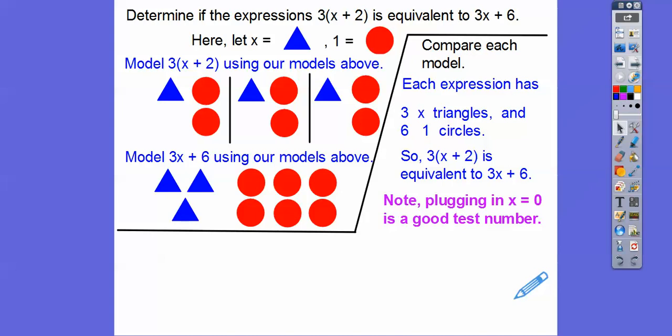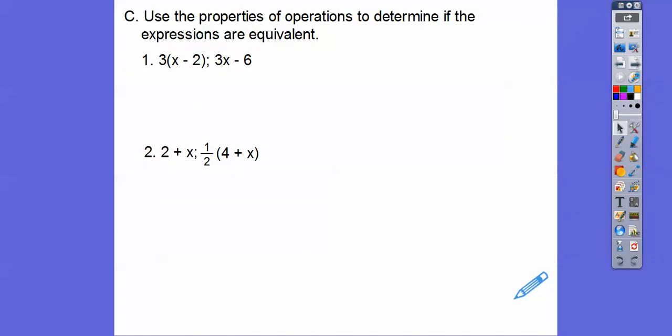Another way is to plug in any number to see if they're equivalent, and zero is always a good number. We plug in zero: 3 times (0 plus 2) = 3 times 2 = 6. And 3x plus 6 gives us 3 times 0 plus 6 = 0 plus 6 = 6. We get 6 on both. Zero is a good number to check, and so is one — that's a good testing strategy.